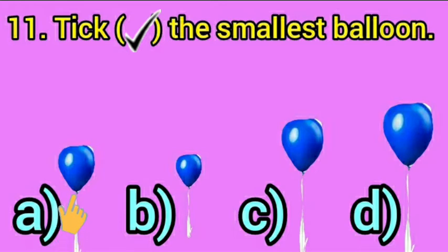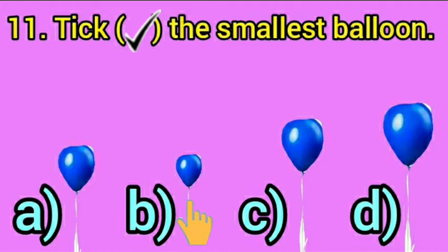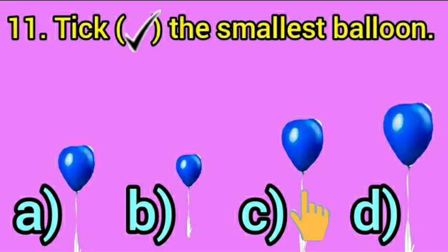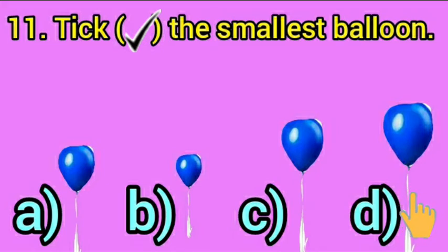Is this balloon smallest? No. Now look at option B. Is this balloon smallest? This balloon seems smallest but we have to see the other balloons. Look at option C. Is this balloon smallest? No. Look at option D. Is this balloon smallest? No, children.